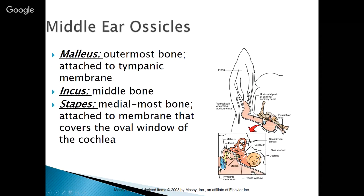The malleus is the outermost bone, attached to the tympanic membrane. The incus is the middle bone, and the stapes is the medial-most bone, attached to the membrane that covers the oval window of the cochlea. There is a lot of physics involved in the construction of this middle ear, and it's an incredible little organ that allows us to hear very specific things.